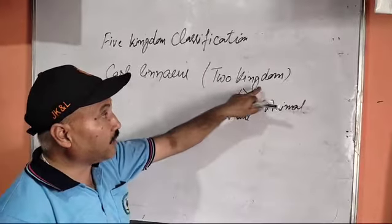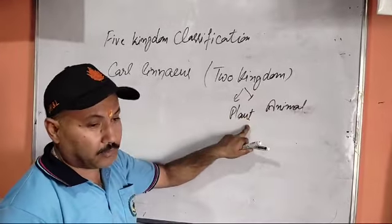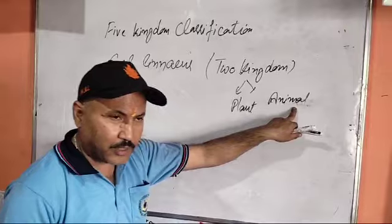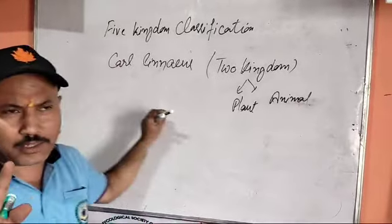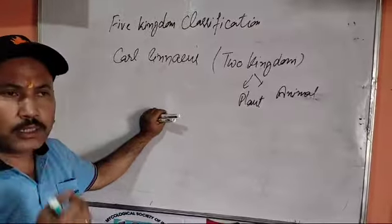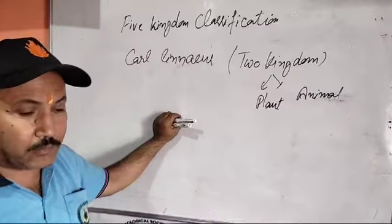Linnaeus has two categories — plant and animal. That means living organisms are divided into two groups: plants and animals.